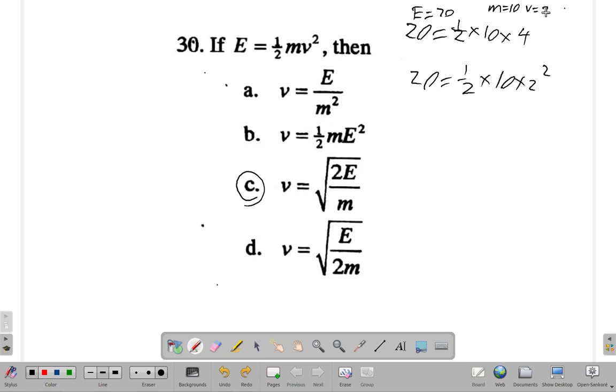Which one of these would work out as well? V is 2. I should get 2 when I work these out. E is 20, 20 over m². M is 10, over 10². 20 over 10² is 20 over 100. It's not 2, so A can't work. V is 2. 2 is supposed to equal ½m. M is 10. ½ by 10 times E². E is 20, 20² is 400. But this can't be 2. This is far from 2. This can't work.